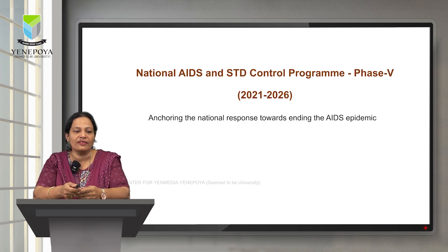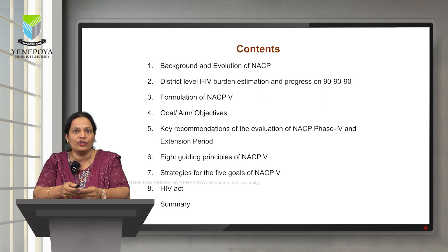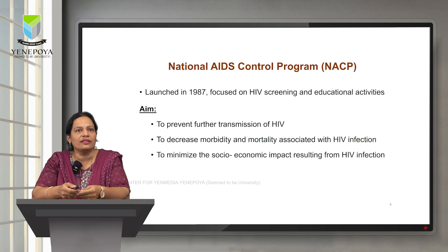National AIDS and STD Control Program, Phase 5 is for the duration of 2021 to 2026, which focuses on anchoring the national response towards ending the AIDS epidemic. The contents of this session include background and evolution of NACP, district level HIV burden estimation, progress on the 90-90-90 targets, formulation of NACP-5, its goal, aim and objectives, key recommendations of the evaluation of NACP Phase 4 and the extension period, the eight guiding principles of NACP-5, its strategies for the five goals, HIV Act, and summary of the session.